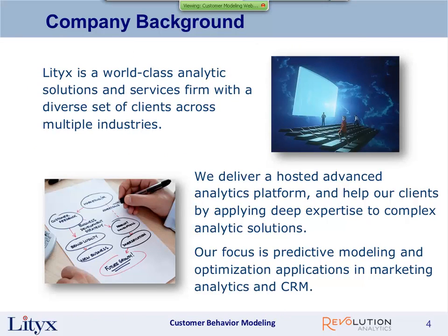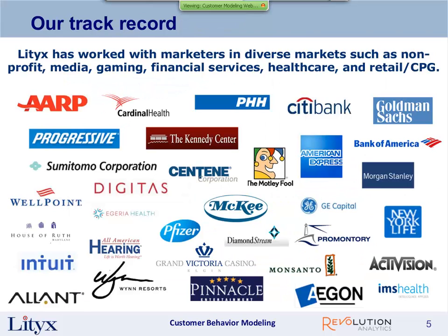So first, a quick background on the company. We're a technology and consulting company firmly focused on enabling our clients to do what I'll call advanced analytics or high-powered analytics — things like predictive modeling and marketing optimization. Our main business area focus is on the marketing domain: customer marketing and CRM analytics. Our clients span quite a few industries and different sizes. A number of our clients have been joint with Revolution, which really speaks to the strength of our partnership.